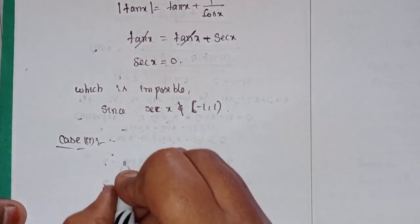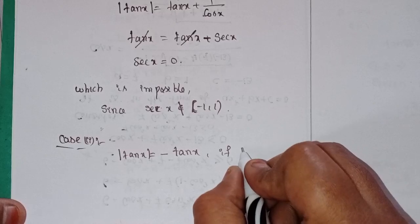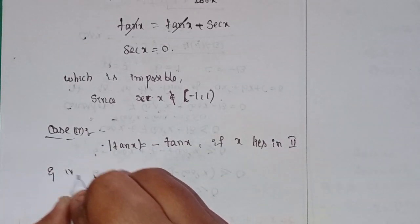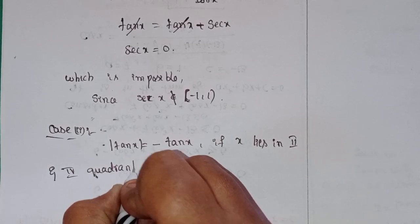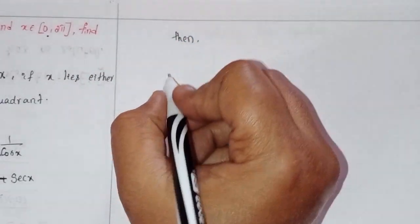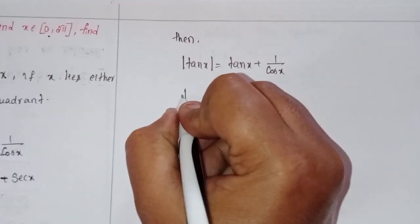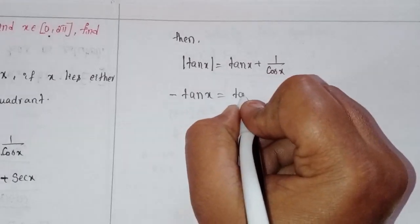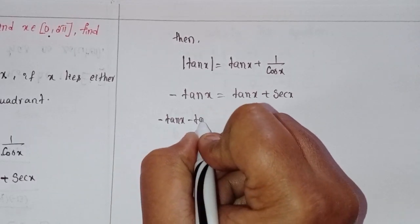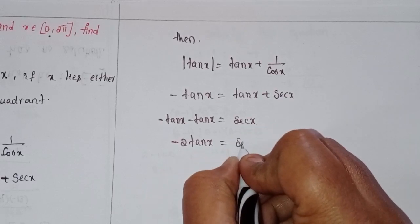Case 2: if x lies in the second or fourth quadrant, then modulus of tan x equals negative tan x. So minus tan x equals tan x plus secant x, which gives minus 2 tan x equals secant x. Writing tan x as sin x over cos x: minus 2 sin x over cos x minus 1 over cos x equals 0. Taking LCM cos x: minus 2 sin x minus 1 equals 0.